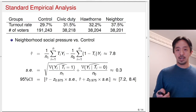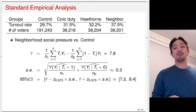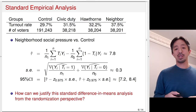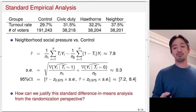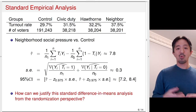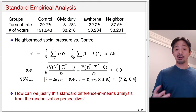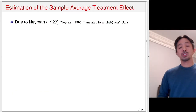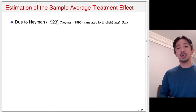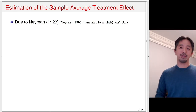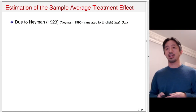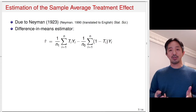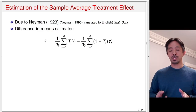This is all standard analysis for a randomized experiment. The question is: how can we justify this difference-in-means analysis from the randomization perspective? Where does this estimator and its standard errors come from? It turns out that inference with the difference-in-means estimator is due to Jerzy Neyman's 1923 paper, published in Polish and not translated to English until 1990. He looked at the difference-in-means estimator — the mean of the treatment group outcome minus the mean of the control group outcome.